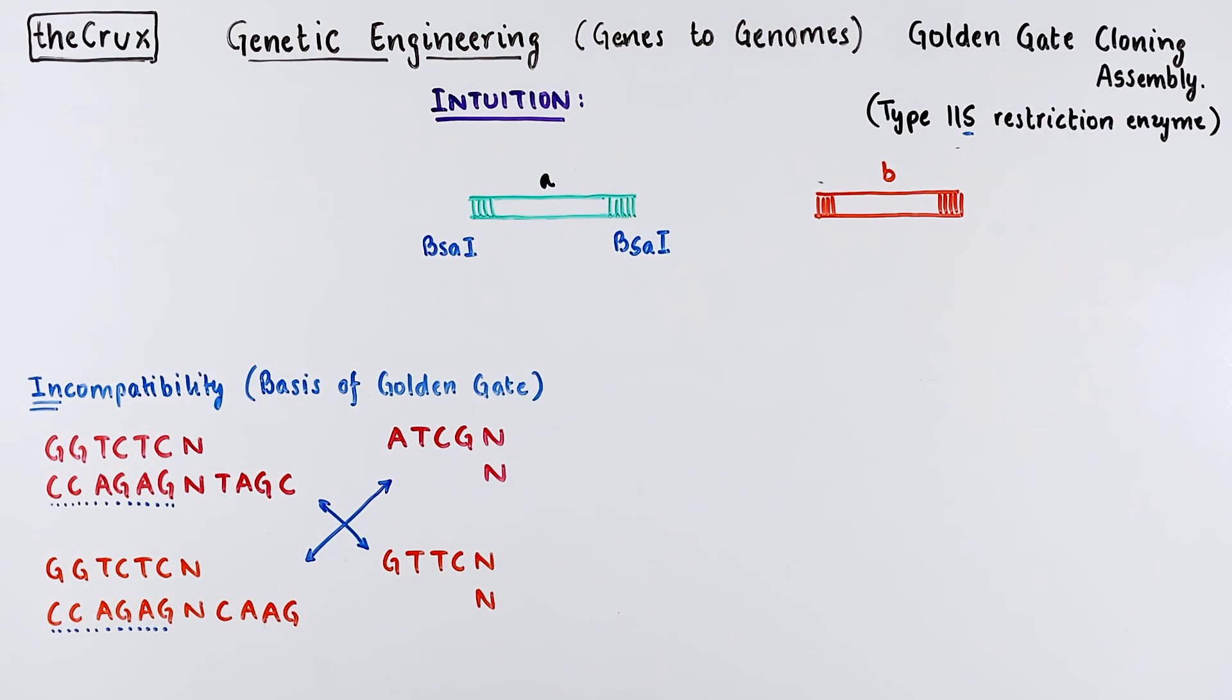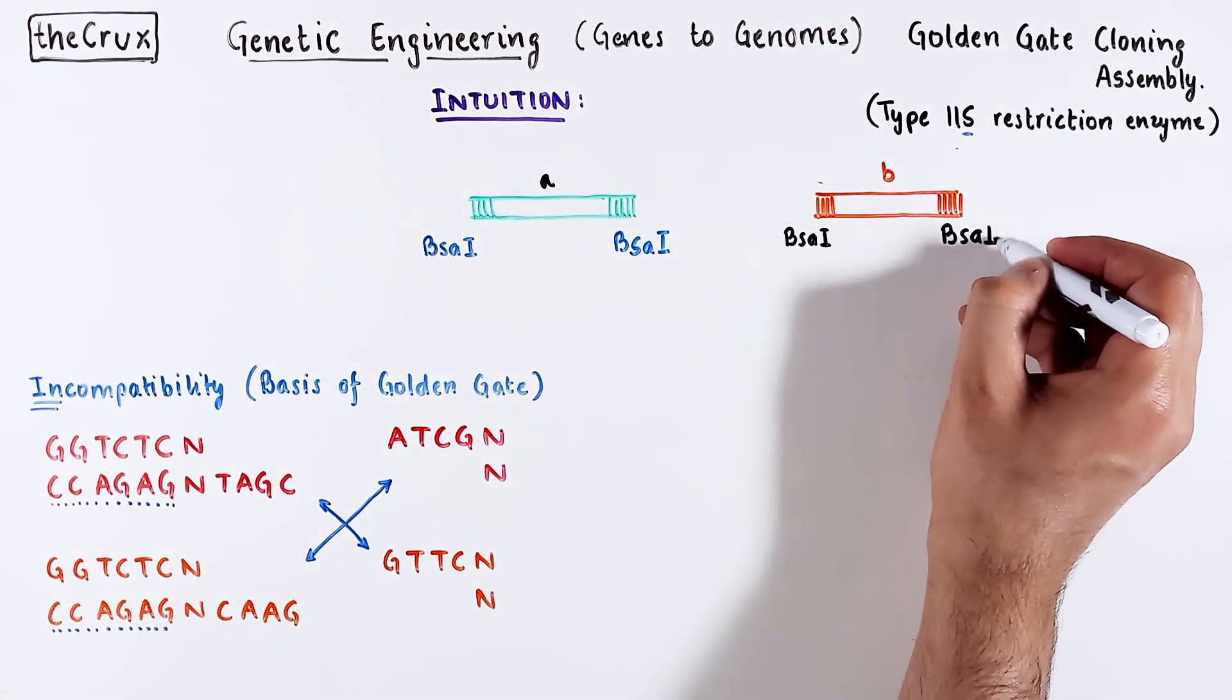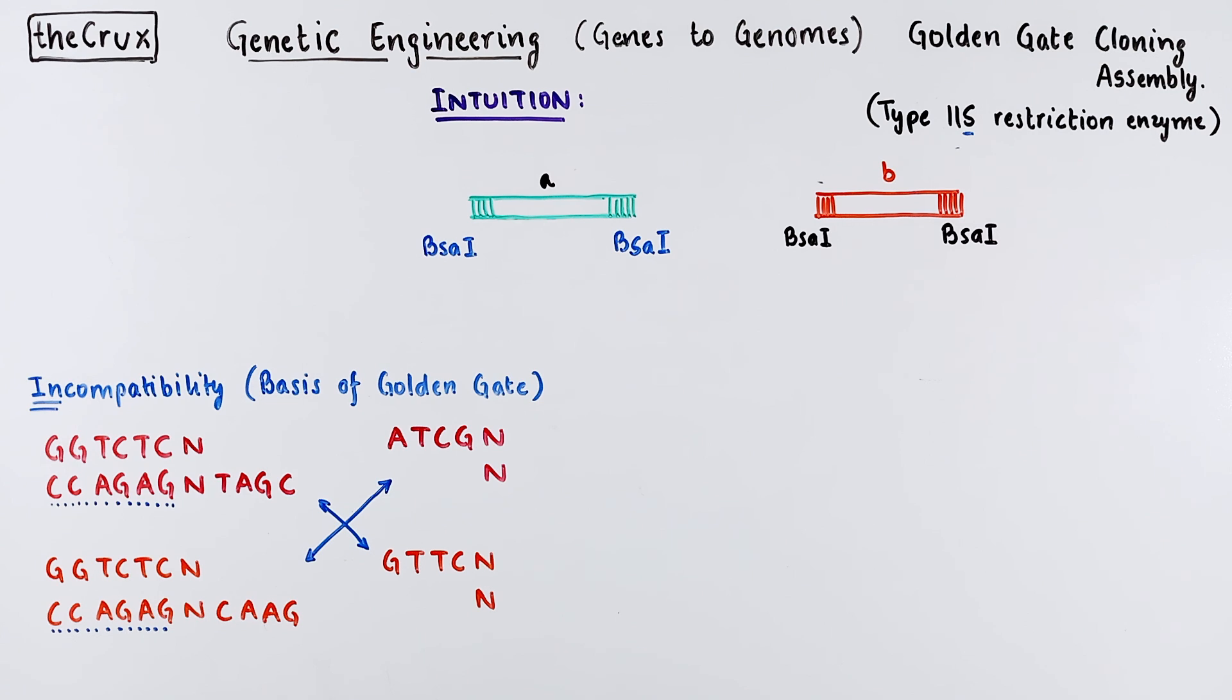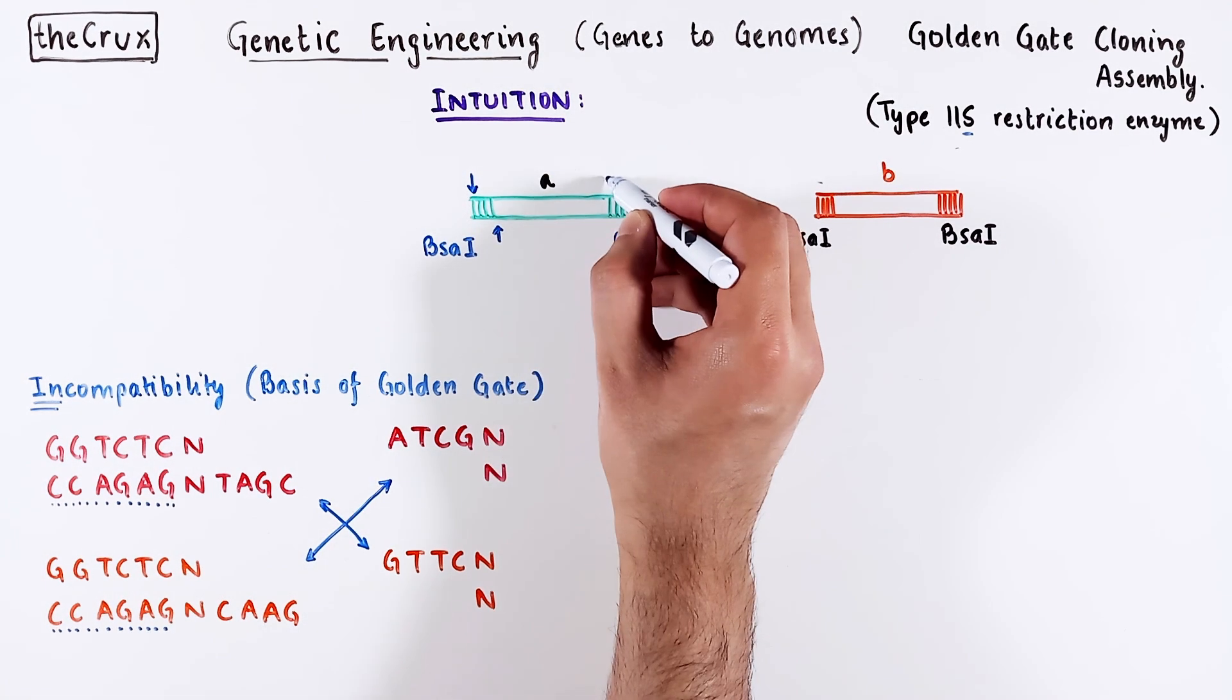But with Golden Gate cloning, you're actually trying to clone multiple inserts into a vector at the same time. So here, fragment B is the second insert. By the same logic, it needs to carry BSA1 sites at the end as well.